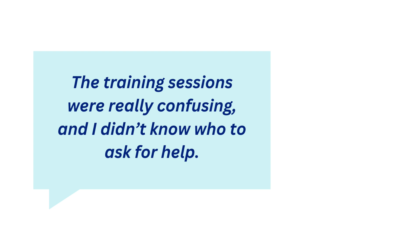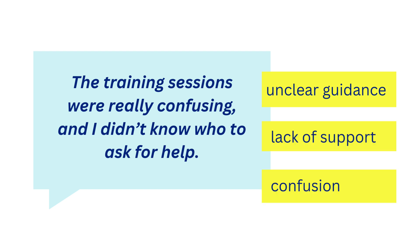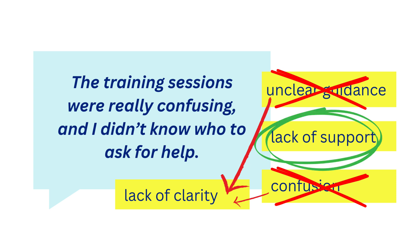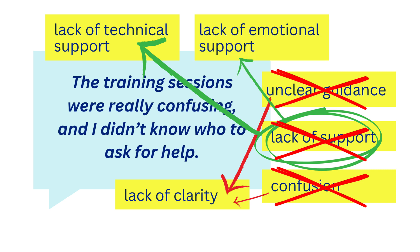Let's look at an example of how codes can change. Take the quote: 'The training sessions were really confusing and I didn't know who to ask for help.' You might have initial codes like 'unclear guidance,' 'lack of support,' and 'confusion.' As you go deeper and look at more data, you might realize 'unclear guidance' and 'confusion' are describing the same underlying issue, so you merge them into 'lack of clarity.' But then 'lack of support' keeps coming up, and you decide to split it into 'lack of technical support' and 'lack of emotional support.' By refining your codes this way, you're getting closer to understanding the nuances in your data. This might feel messy at first, but it's a sign that you're peeling back the layers to uncover more precise and meaningful insights.